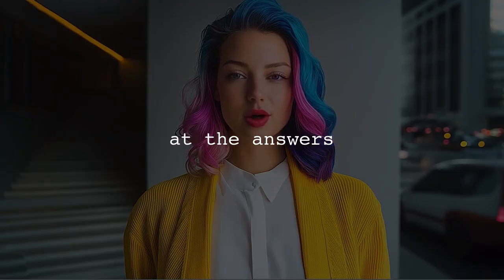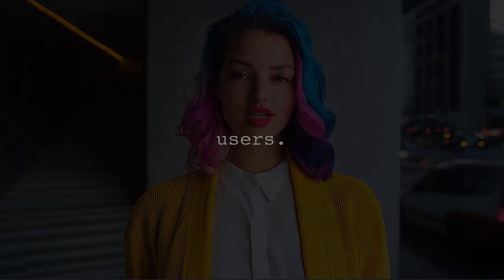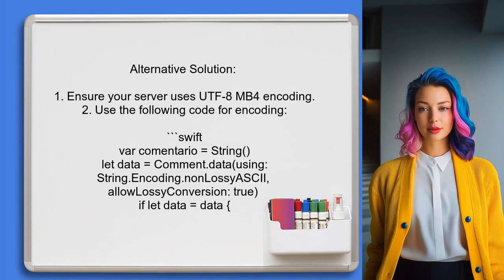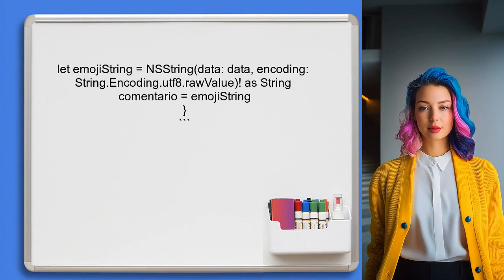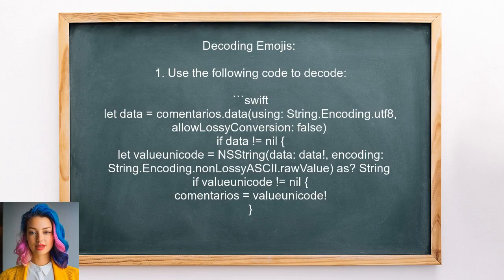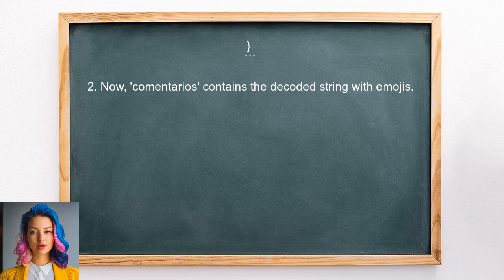Now let's look at the answers provided by other users. An alternative solution for encoding emojis suggests using UTF-8 encoding on your server. For encoding, you can use the same code to convert your comment into a string that contains the emoji. For decoding, a method is provided that converts the emoji string back into a readable format. You can use this code to decode your comments.